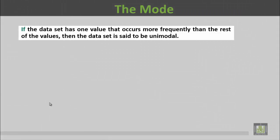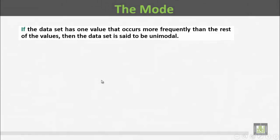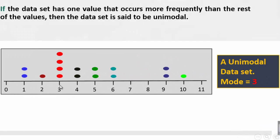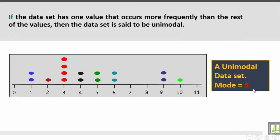If the data set has one value that occurs more frequently than the rest of the values, then the data set is said to be unimodal. If we look at the value of three for that variable, it has the frequency of four, which is higher than any other frequency for any other value. So this is a unimodal data set where the mode is three.